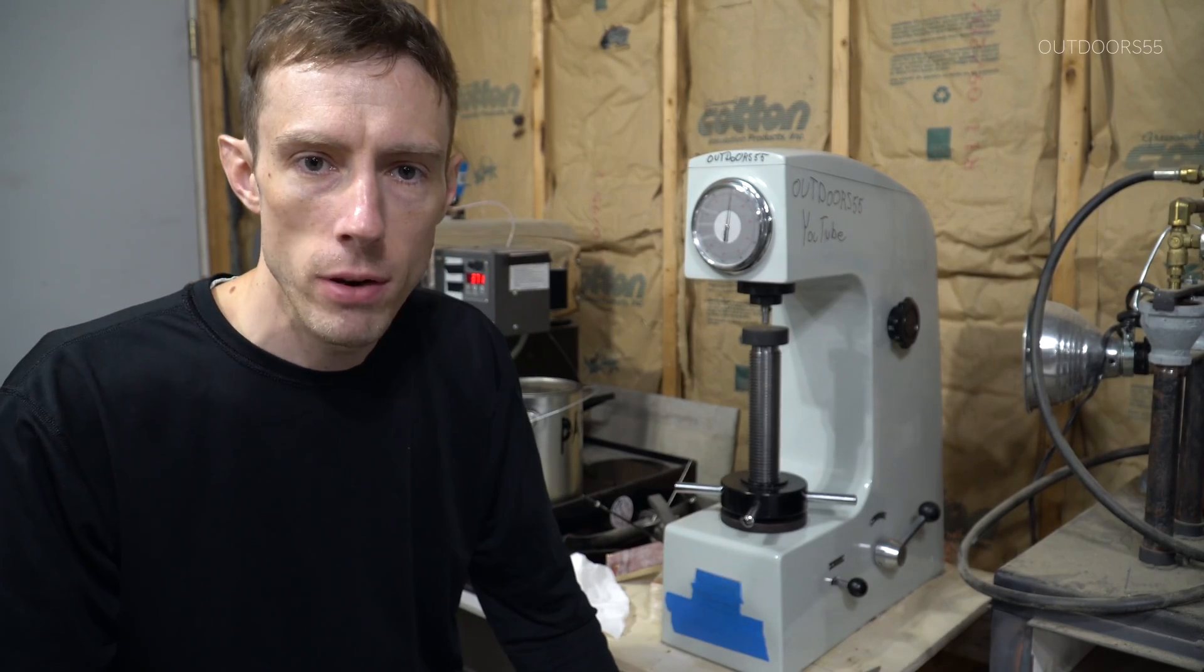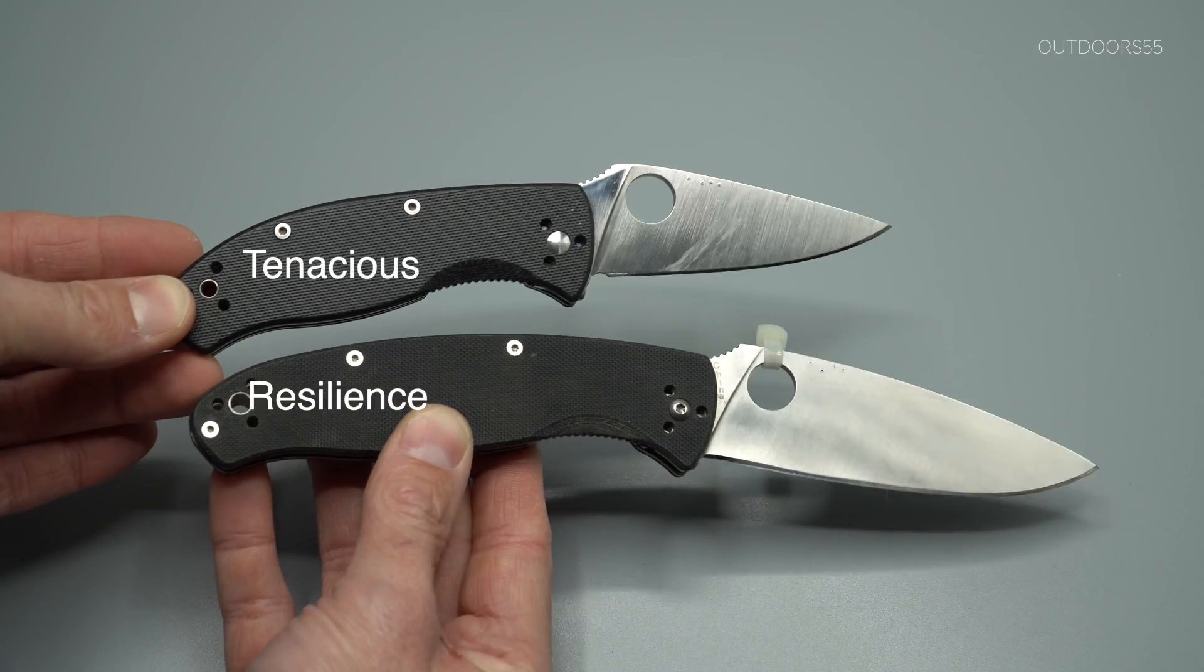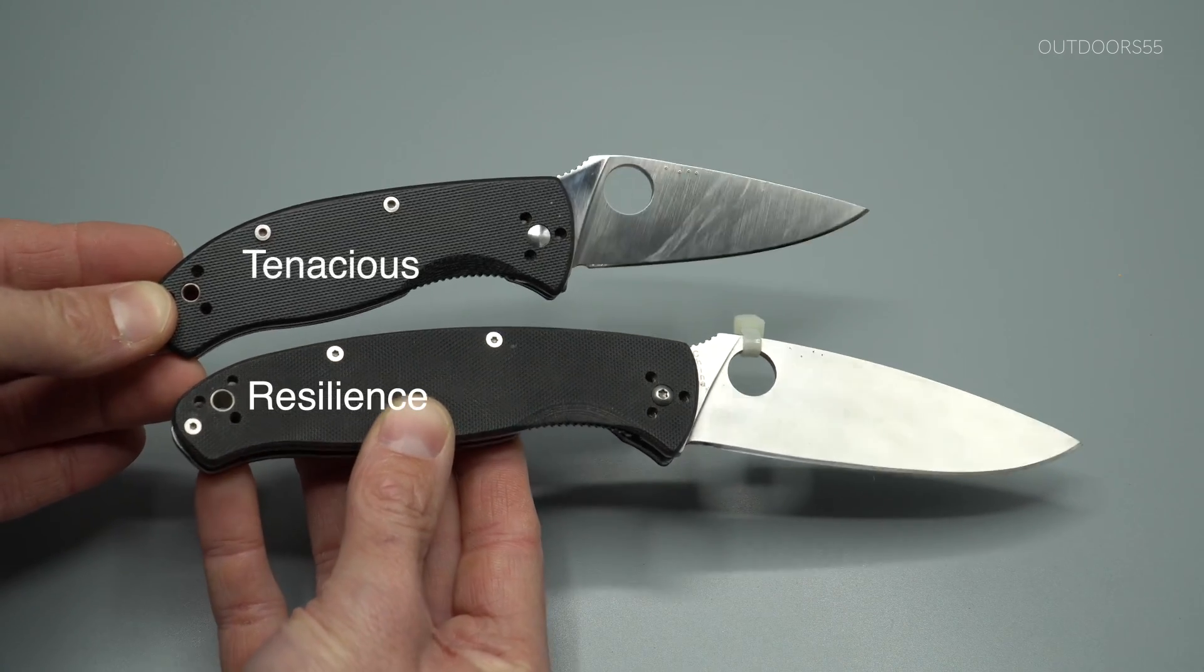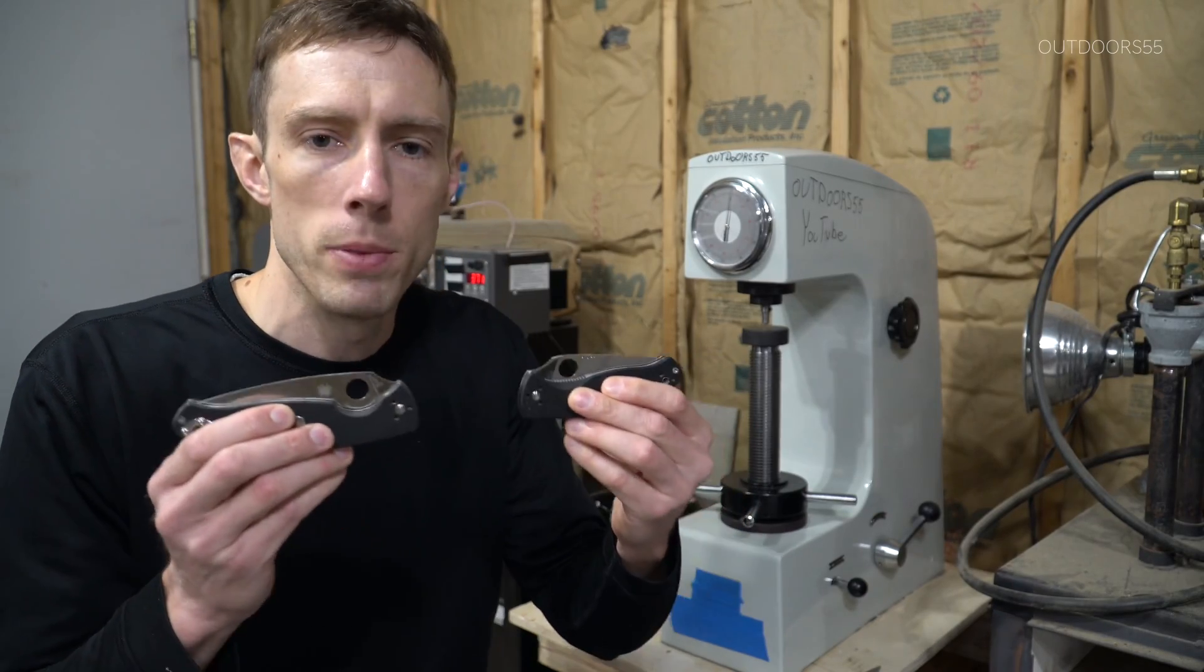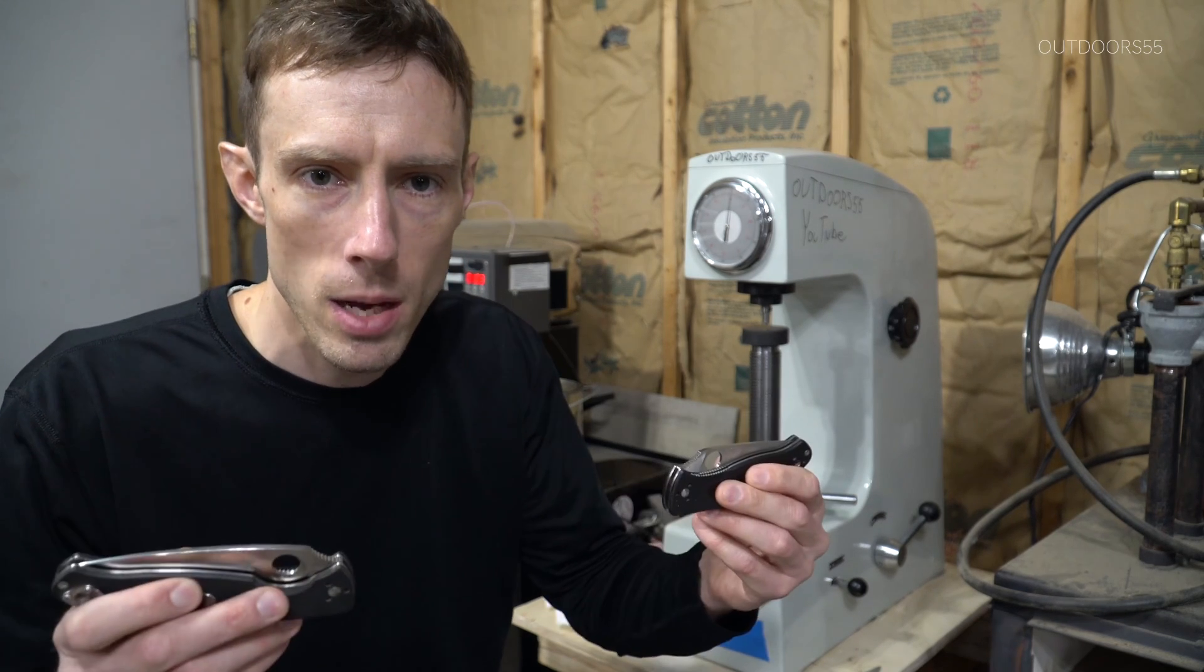Today we're going to be doing a hardness test and a brief overview of the Spyderco Resilience. This is the bigger brother to the Spyderco Tenacious. They also make a smaller one called the Spyderco Persistence. Persistence, Tenacious, Resilience - try saying that ten times fast.